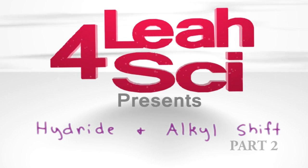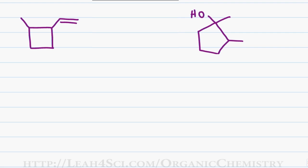For my final example, I will use a reaction that has recently appeared on the exam of one of my Orgo students. For the starting material, I have a cyclobutane with an alkene coming off the ring. For my final product, I have a substituted cyclopentanol.